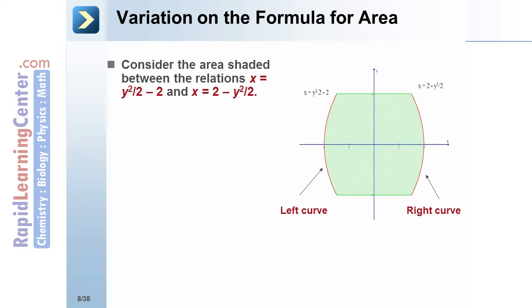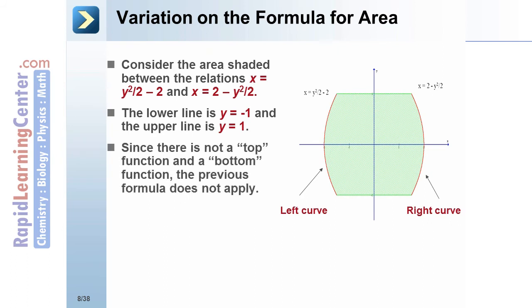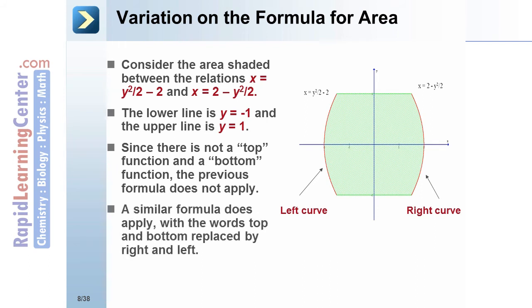Consider the area of x = y² - 2 and x = 2 - y²/2. The lower line is y = -1 and the upper line is y = 1. Since there is not a top function and a bottom function, the previous formula does not apply.